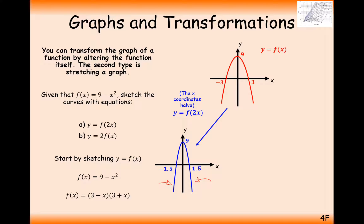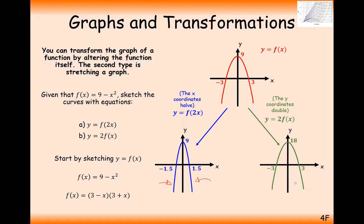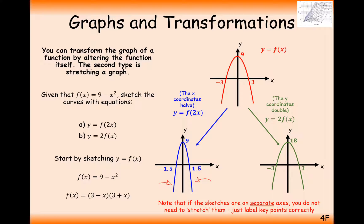What happens with a 2f of x graph? It's an outside-the-bracket transformation, hence we have a vertical movement. Anything on the top stretches upwards, anything on the bottom stretches downwards. The minus 3 and 3 don't move because they're on the x-axis — 2 times 0 is 0. We stretch the 9 upwards to an 18. So that's how this graph is going to look.